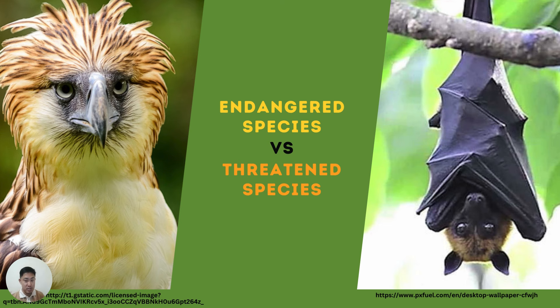What's the difference between endangered species and threatened species? When we say endangered species, this means a species is in danger of extinction throughout all or a significant portion of its range. When a species is endangered, it's nearly extinct — only a very small number are left of their species. Definitely in that picture, the endangered species, the one near extinction, is the Philippine eagle.